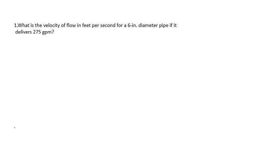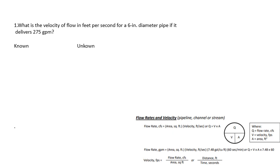Question number one: What is the velocity of flow in feet per second for a six-inch diameter pipe if it delivers 275 gallons per minute? We're going to start with our knowns and unknowns. We have a six-inch diameter pipe flowing at 275 gallons per minute. Our unknown is velocity in feet per second.